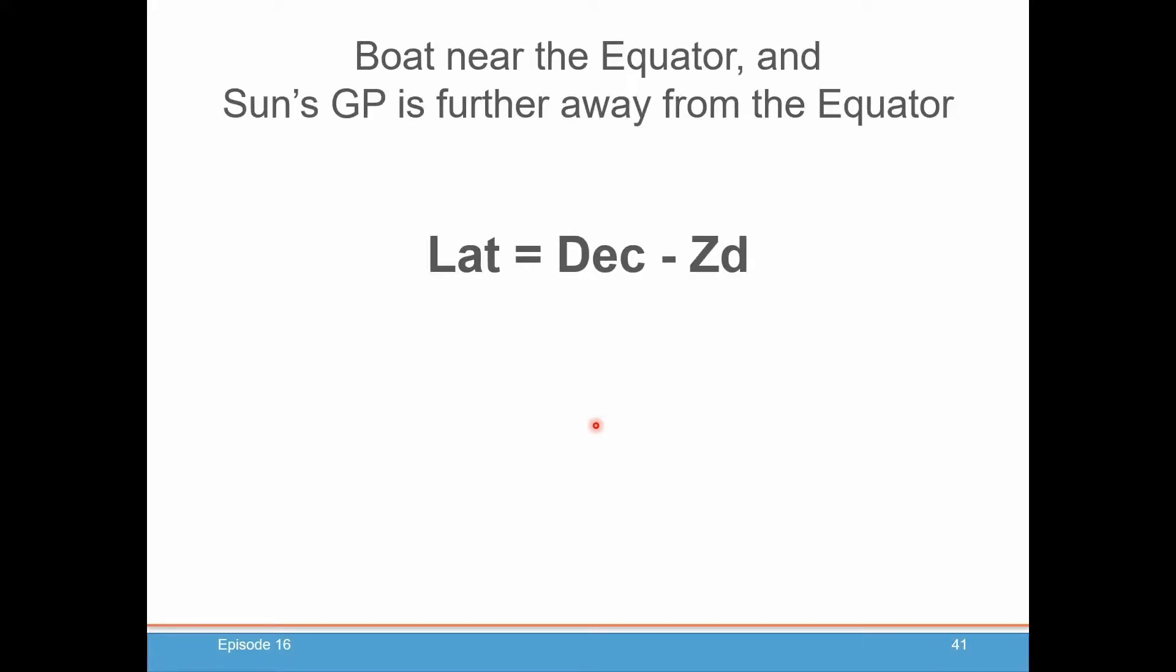If the boat happens to be in the tropics near the equator, and the sun is in the same hemisphere but it is closer to the pole than you are, further away from the equator than you are, then your latitude is the declination minus the ZD.